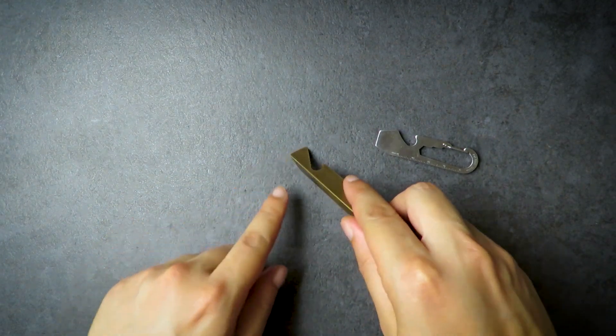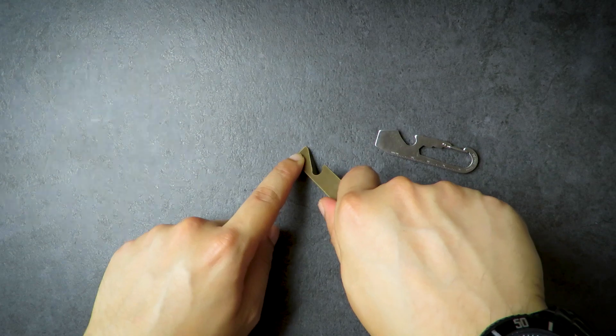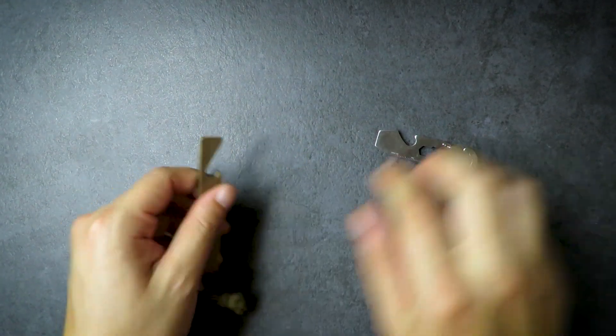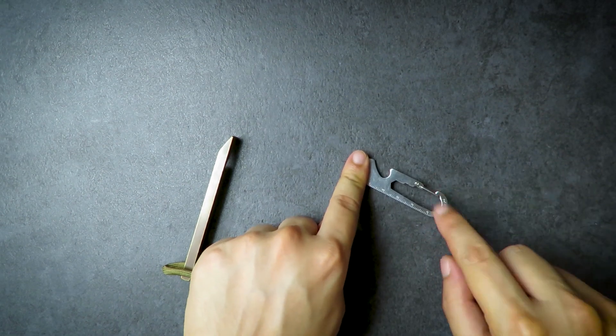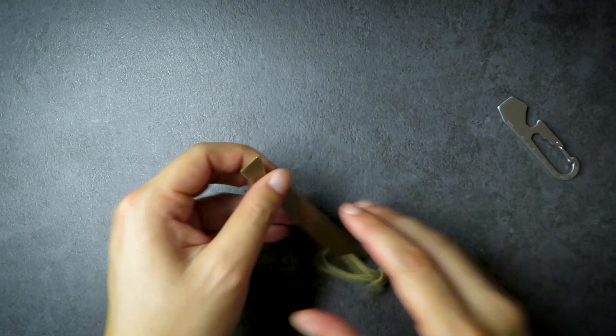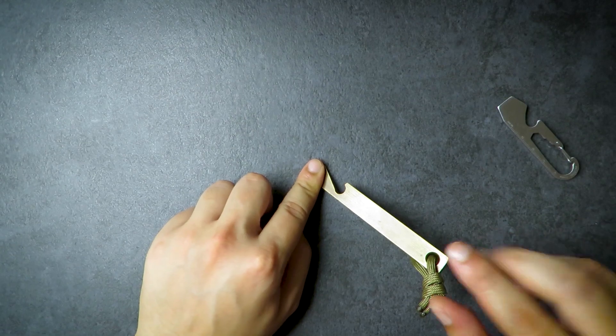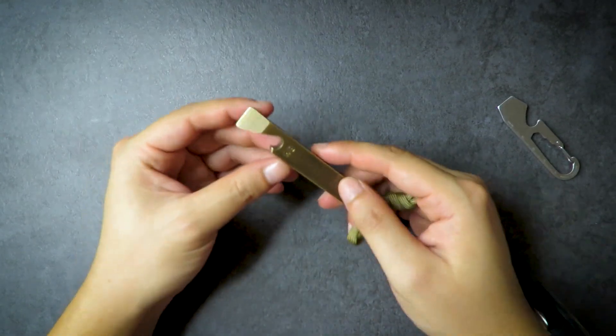You can press this into something, then you can use this to create a bit of leverage and then pry it open like that. This one has that feature as well, but because it's a lot thinner, you don't have as much leverage compared to this guy, which gives you a lot more room down here. So that's very nice.